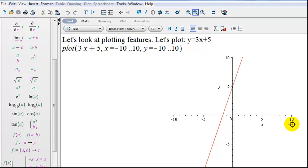We'll hit enter and notice that Maple did what we asked. It plotted from negative 10 to 10 on the x-axis and negative 10 to 10 on the y-axis.